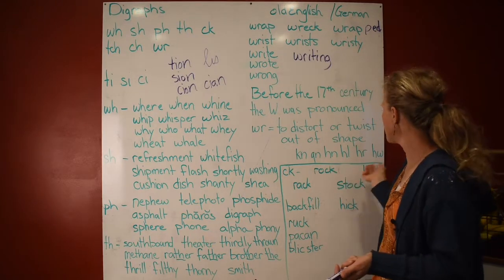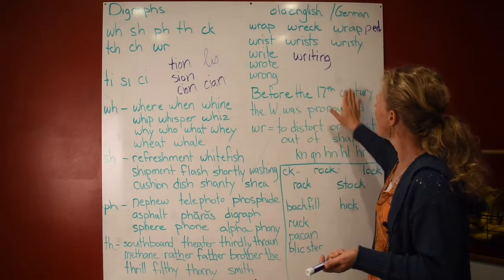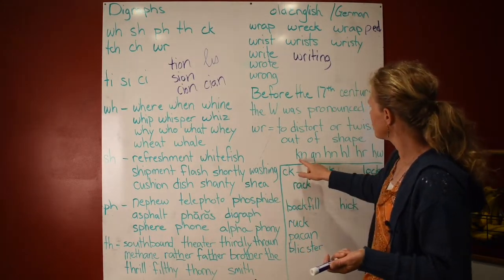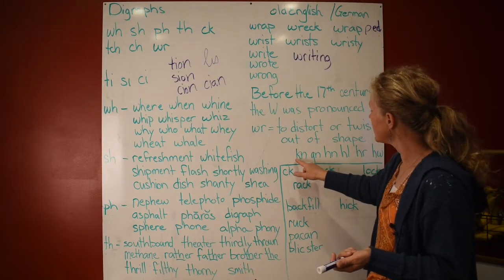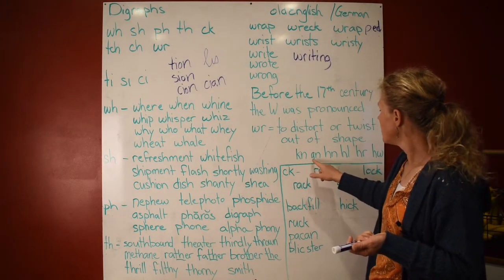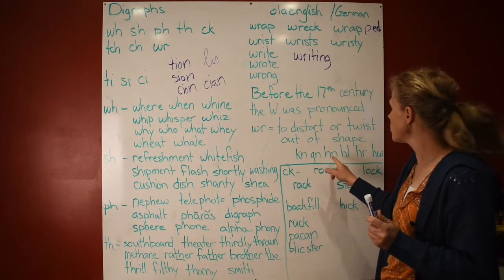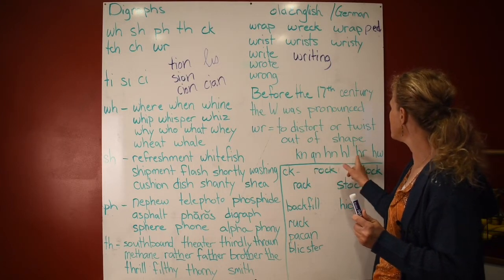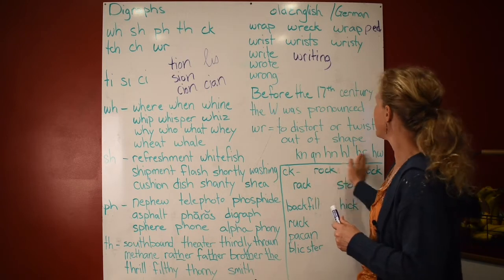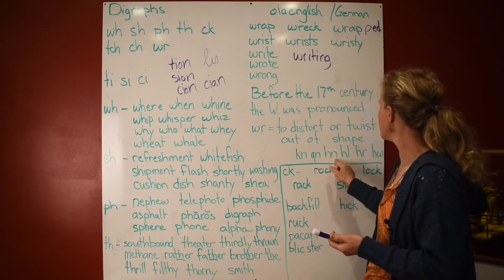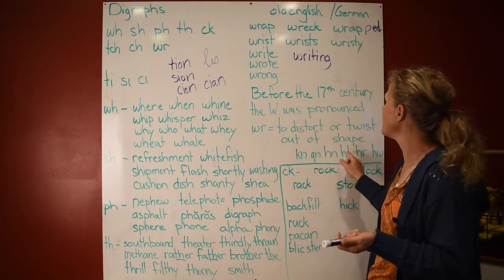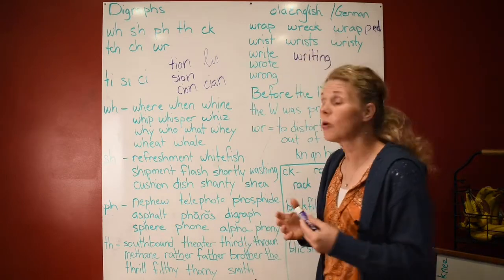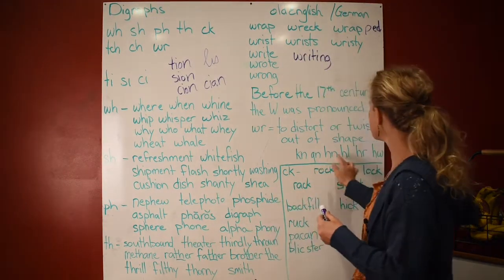So now we have other combining forms that came out of the 17th century and before. We have KN and GN, which we still use. What's interesting is we also had HN, HL, HR, and HW — and the H in these was all dropped. So something like 'hlaf' would have been said aloud. Same with 'hruf' — those were dropped. But we had some words where KN made its own sound.